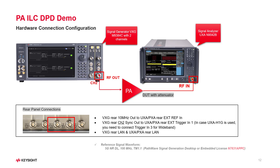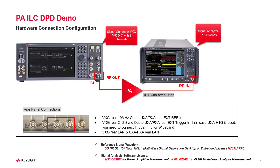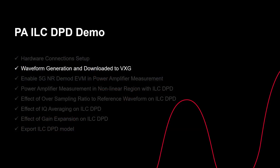After hardware connections, you need to prepare the reference signal waveform. You can use PathWave signal generation desktop or embedded software version with N7631A license to generate a 5G signal, or you could prepare your own waveform. To see how to generate a 5G signal using PathWave signal generation desktop, please go to the link in the description box. One more thing: if you want to get 5G demod EVM results during the Power Amplifier measurement, you need to have the 5G NR analysis measurement application license as well. Now we are ready to download the reference waveform to the VXG.